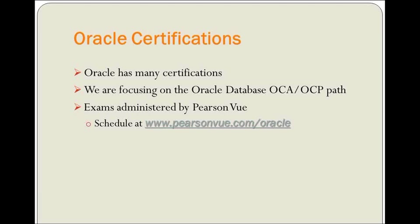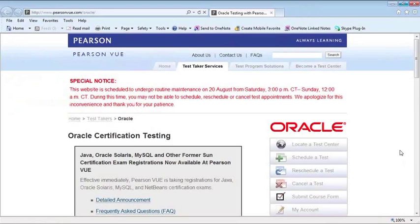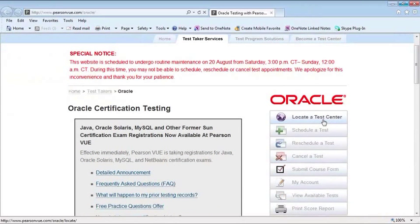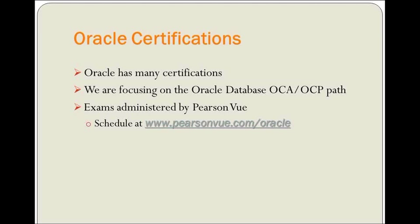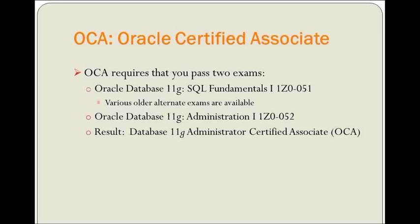OCA and OCP stand for Oracle Certified Associate and Oracle Certified Professional. In order to get these, you're going to have to pass two exams for the OCA and a third exam for the OCP. The exams are administered for Oracle by Pearson VUE. Their website is www.pearsonvue.com/oracle. When you get to that website, you can locate test centers, schedule tests, reschedule a test, look at your account, see what tests you've taken and passed.